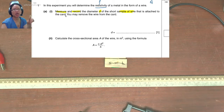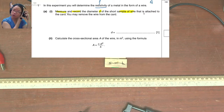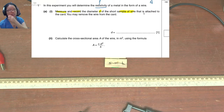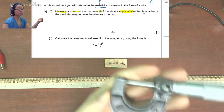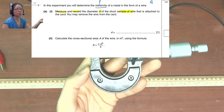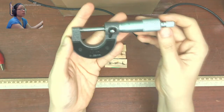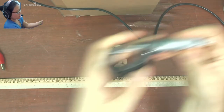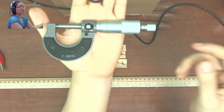Step 1: measure and record the diameter of the wire attached to a card. It may not give you a sample of a wire attached to a card, so what you can do is measure the actual wire that is here. So that is what we would like to measure now. We are going to use a micrometer like this one to measure the diameter of the wire.